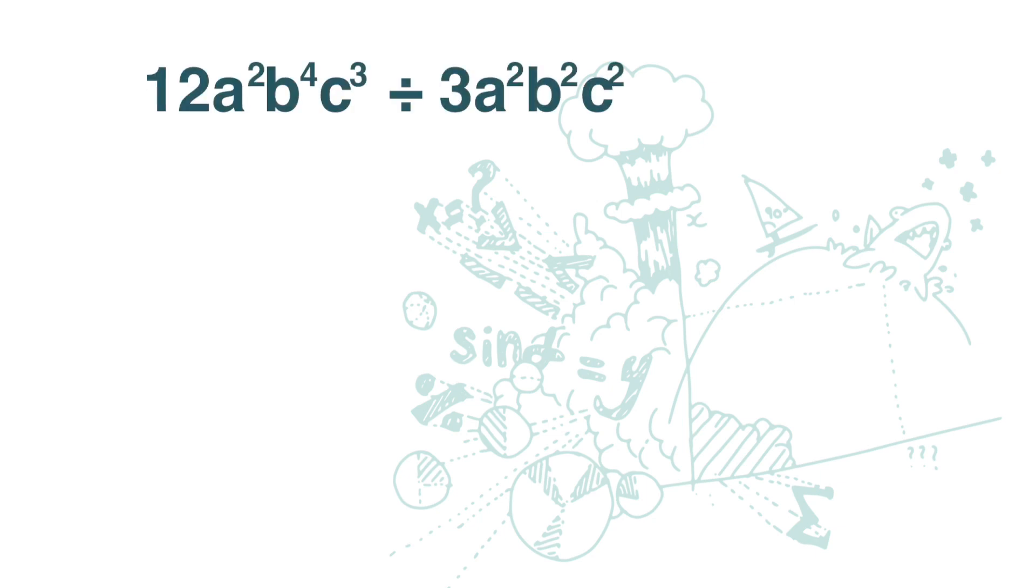For this question, we first write it in the form of a fraction. a square is a times a. b to the power of 4 is b times itself 4 times. We are going to write this all out.